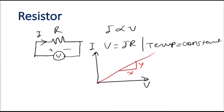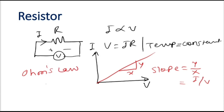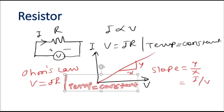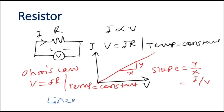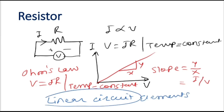The slope Y by X is equal to I by V. By Ohm's law, V/I is equal to R, provided that temperature is constant. An important point is the restriction on Ohm's law: it is applicable to linear circuit elements, for linear circuits. So whenever we think about a resistor, this equation holds good, and our assumption is that the temperature should be constant.